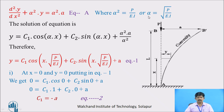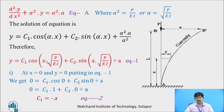Putting the value of α back, we get y equals C1 cos(x√(P/EI)) plus C2 sin(x√(P/EI)) plus A. This is equation number 1. Now applying the first boundary condition: at x equals 0, y equals 0 — meaning the deflection at point A is zero. Substituting into equation 1, the cosine term becomes cos(0) equals 1 and the sine term becomes sin(0) equals 0, giving 0 equals C1 times 1 plus C2 times 0 plus A. Therefore C1 equals minus A — this is equation number 2.